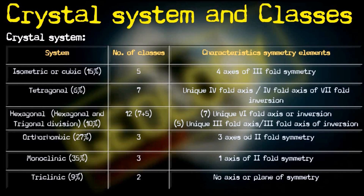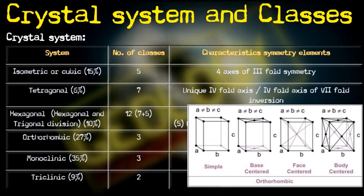Then there is the orthorhombic system. In this system there are three axes of unequal length: a is not equal to b, and b is not equal to c. However, the angle between the axes is 90 degrees and they are orthogonal to each other.